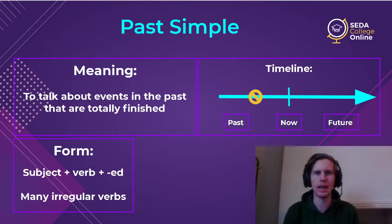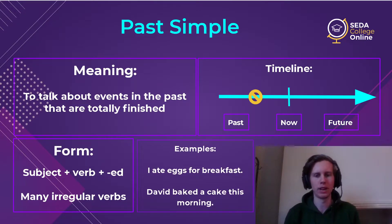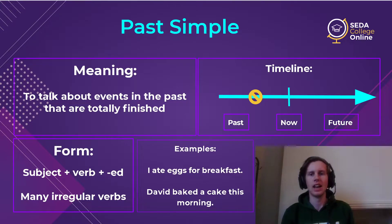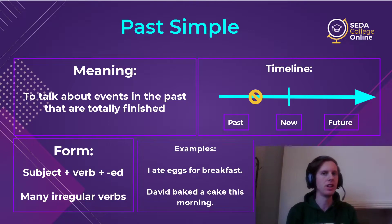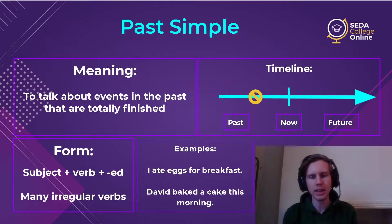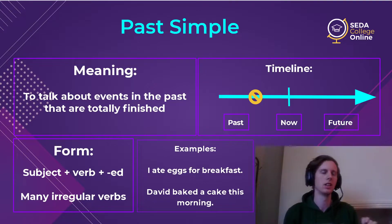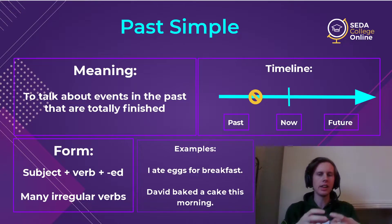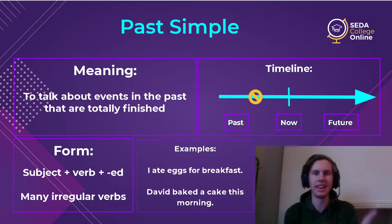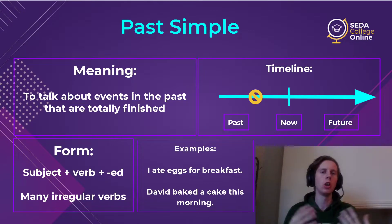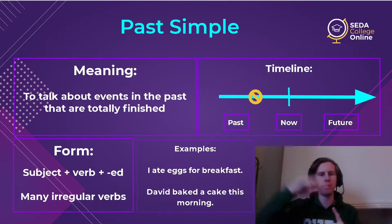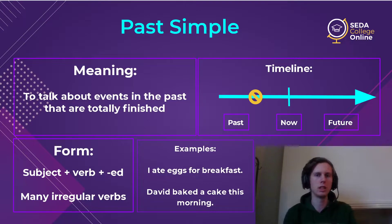Some examples: 'I ate eggs for breakfast.' It's done — no more information, nothing about any other time or event. Or 'David baked a cake this morning.' One event, all happened in the past, no other thoughts. That's what the past simple is doing — looking into the past and talking about just one specific event. As you'll see with the next verb tenses, all of the other past tenses connect back to the past simple, because that past simple is really your one point in time.